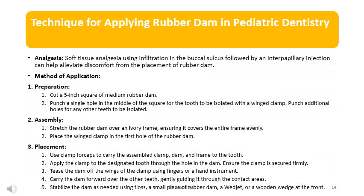Technique for applying rubber dam in pediatric dentistry. Analgesia: begin by administering soft tissue analgesia using infiltration in the buccal sulcus, followed by an interpapillary injection. This helps alleviate discomfort associated with the placement of rubber dam. Method of application — preparation: cut a 5-inch square of medium rubber dam. Punch a single hole in the middle of the square for the tooth to be isolated with a winged clamp. Punch additional holes for any other teeth to be isolated.